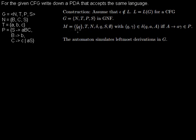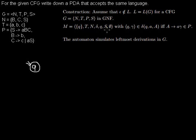This is the definition of the automaton. The set of states contains one state named Q. The set of terminals is the same as the set of terminals from the grammar. The set of stack symbols is the same as the set of non-terminals in the grammar. The transitions are defined later. The initial state is Q, because we don't have any other. The bottom symbol is the start symbol from the grammar, and the set of final states is empty, so the automaton accepts a word with an empty stack.